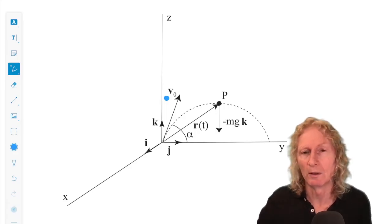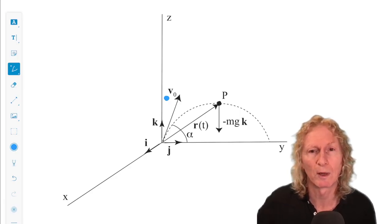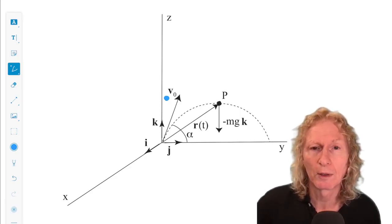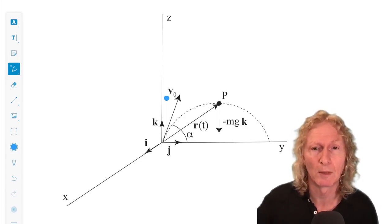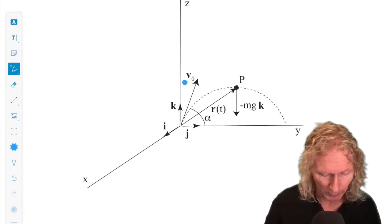And we can make this choice for the initial velocity vectors in a plane, call it the yz-plane, without loss of generality, because the two vectors r of t, position vector, and v, define a plane. And we'll take that to be the yz-plane.